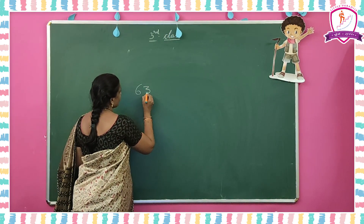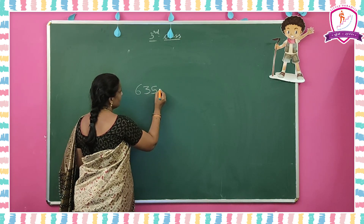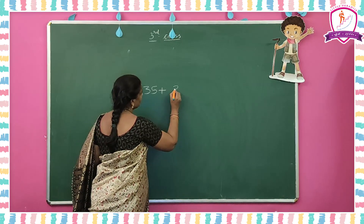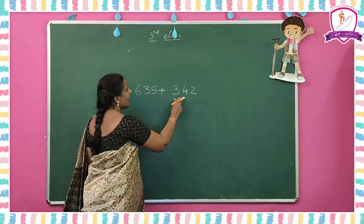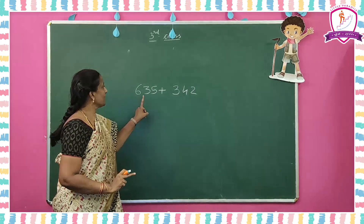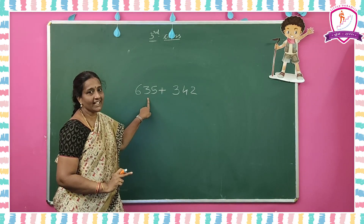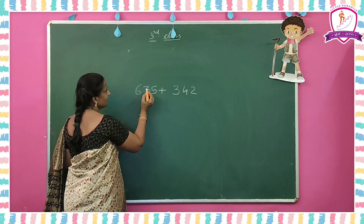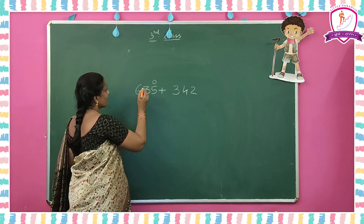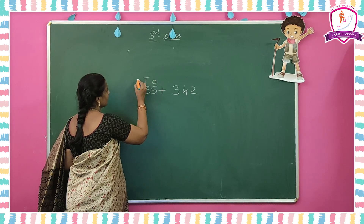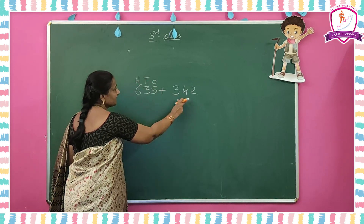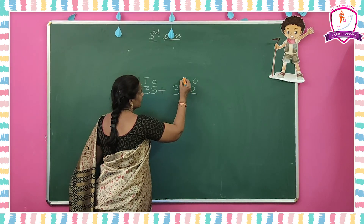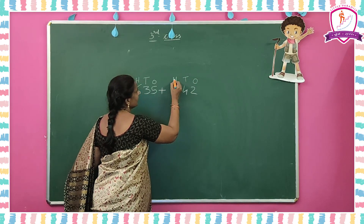635 plus 342. Add these two numbers. How many digits does this number have? It is a 3-digit number. This is units place, tens place, hundreds place. Units place means ones place. This is also a 3-digit number — ones place, tens place, hundreds place.